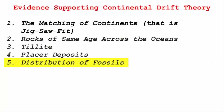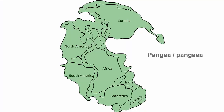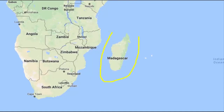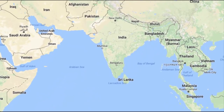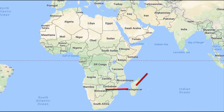The fifth and last evidence is the Distribution of Fossils. When identical species of plants and animals are found in different landmasses, that provides strong evidence that everything was once a single large landmass. Lemur is one such species, very famous in Madagascar, and fossils of this species were also found in India. Though it is said that lemurs originated in Africa, linking these three landmasses shows there is a clear correlation.